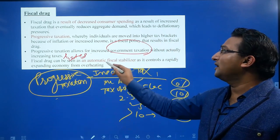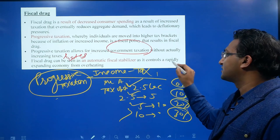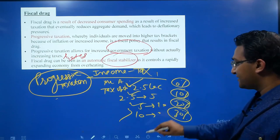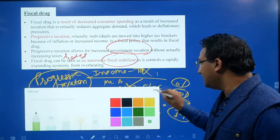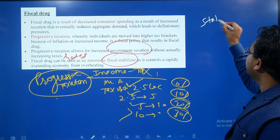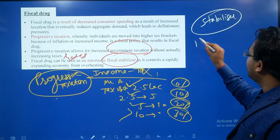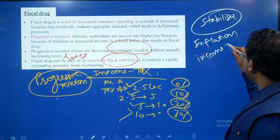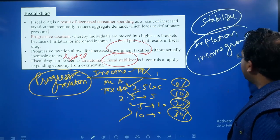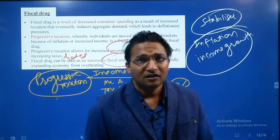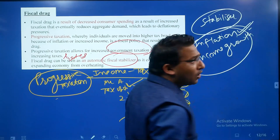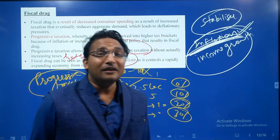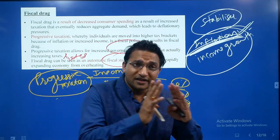Fiscal drag can be seen as an automatic fiscal stabilizer, as it controls a rapidly expanding economy from overheating. This acts as a stabilizer because when there is high inflation and the income of people is increasing, the economy is doing well. That is desirable, but inflation can go beyond control.